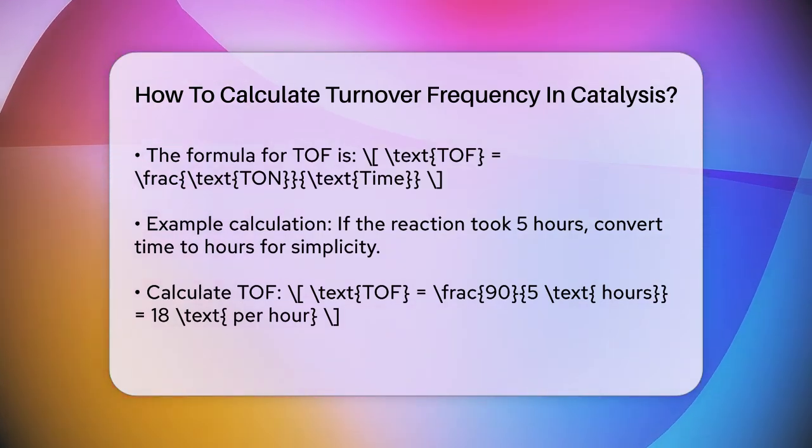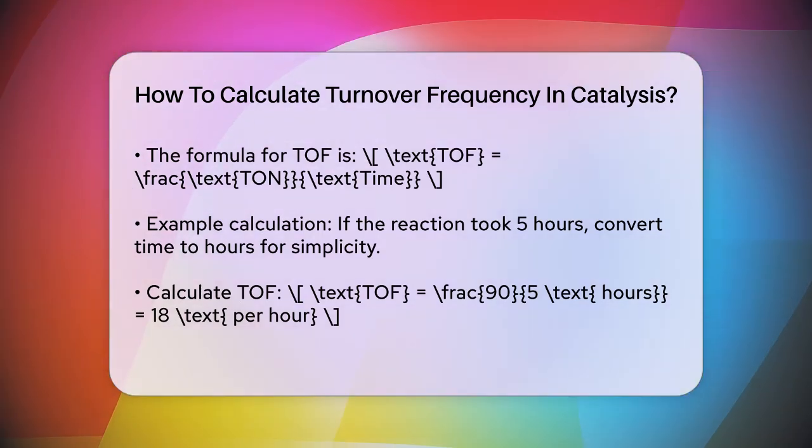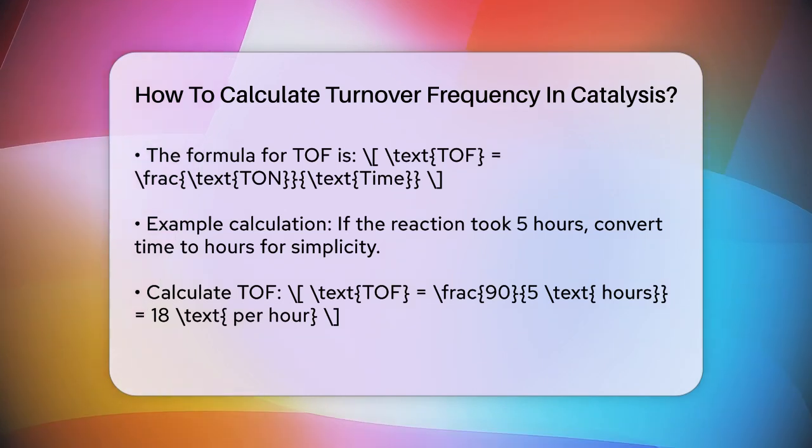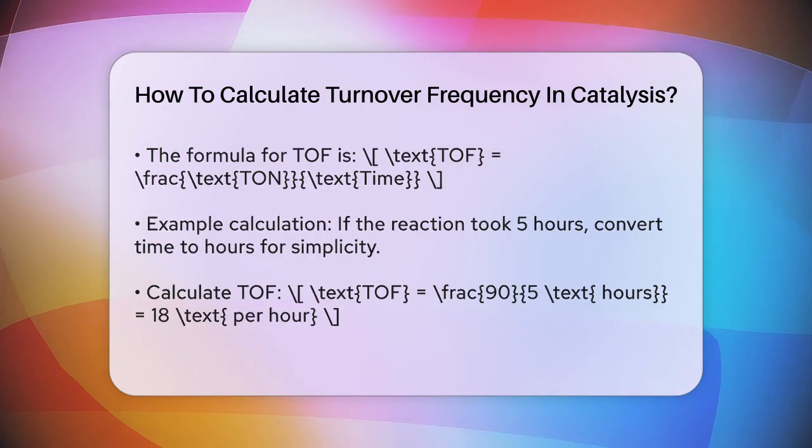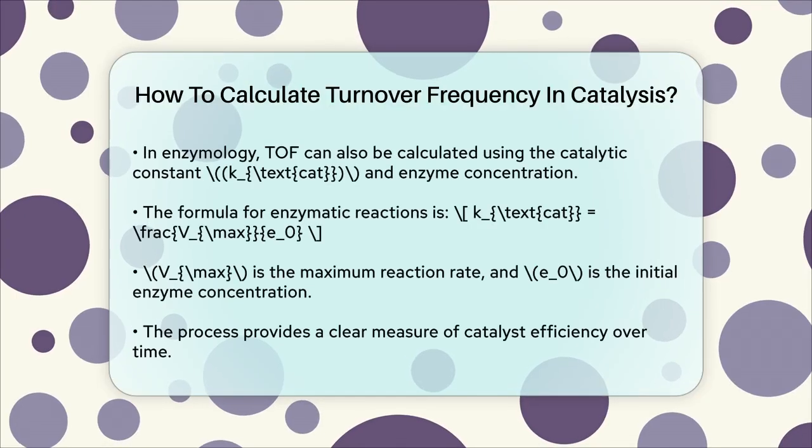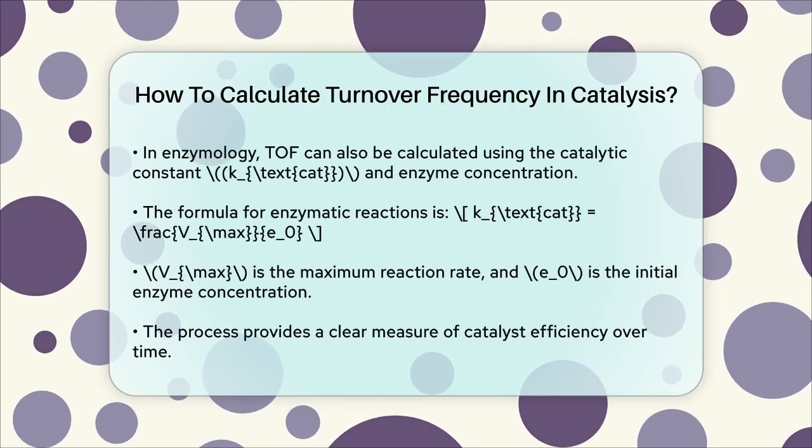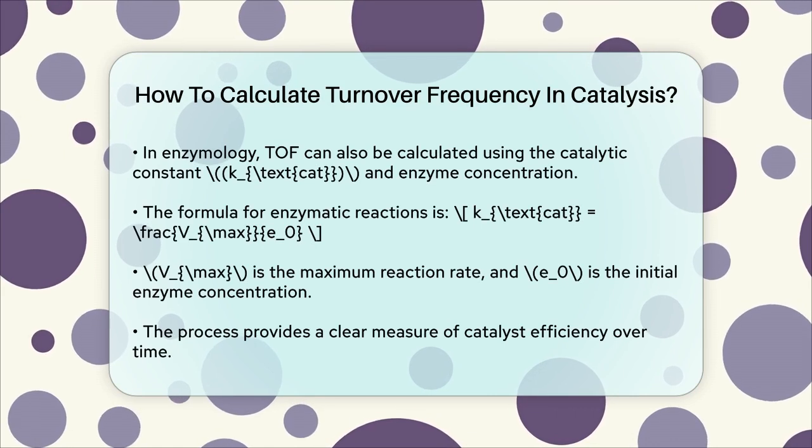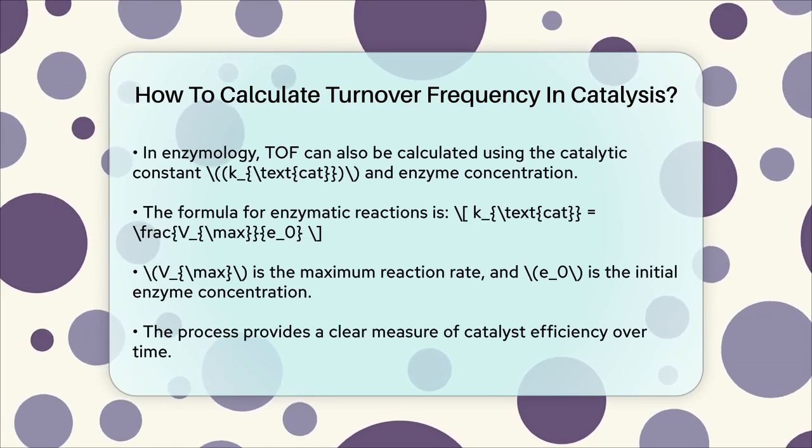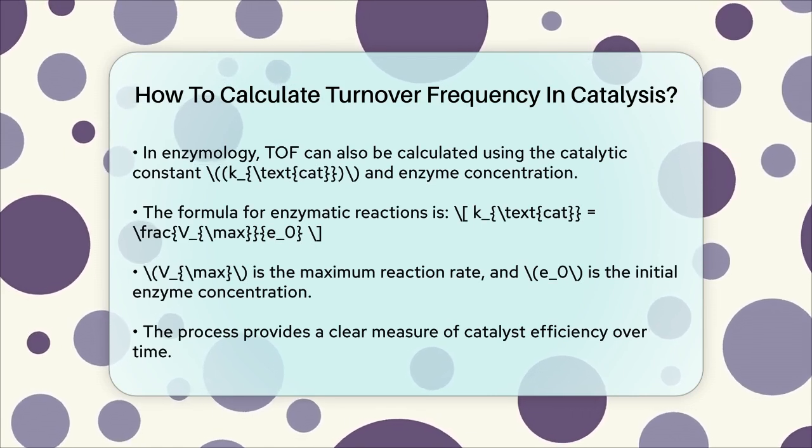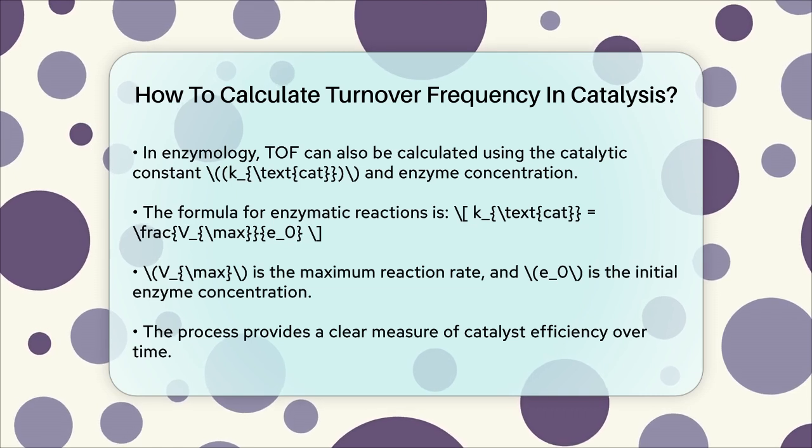In more precise terms, especially in enzymology, the TOF can be calculated using the catalytic constant k_cat and the enzyme concentration. Here, the formula is k_cat equals V_max divided by E_0, where V_max is the maximum reaction rate and E_0 is the initial enzyme concentration. However, this is more specific to enzymatic reactions and not directly applicable to all types of catalysis.